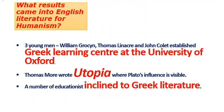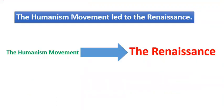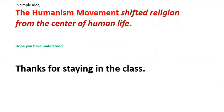I know you are interested to know what results the movement brought to English literature. Three young men — William Grocyn, Thomas Linacre, and John Colet — established a Greek learning center at the University of Oxford. Thomas More wrote Utopia, where Plato's influence is visible. A number of educators became inclined to great literature. Also importantly, the humanism movement paved the way for the Renaissance.